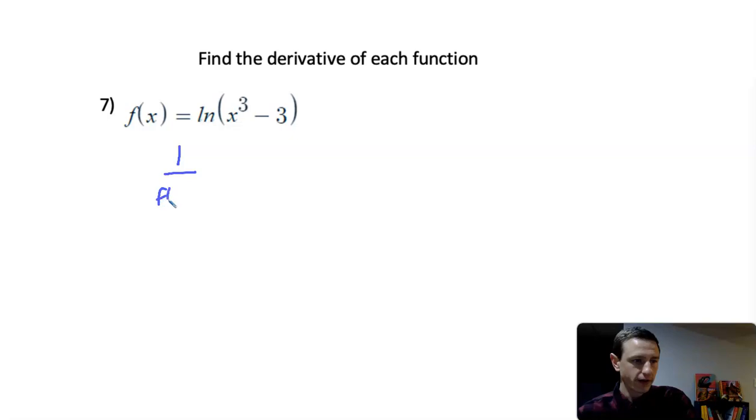It's going to be 1 over f of x, because if you take the derivative of natural log of x, the derivative is 1 over x. But since we have a function instead of just x, the natural log of f of x, we have to use the chain rule. So it's 1 over f of x times the derivative of that f of x function.